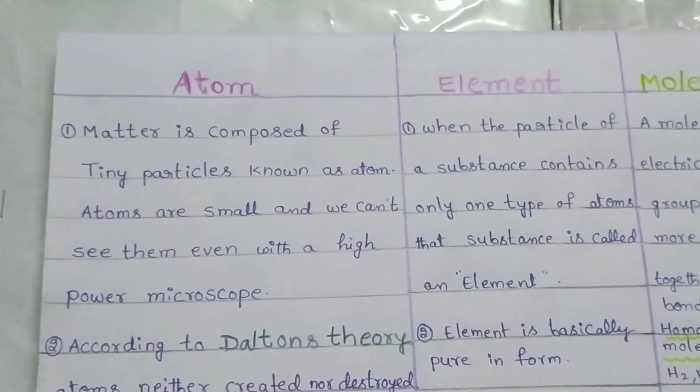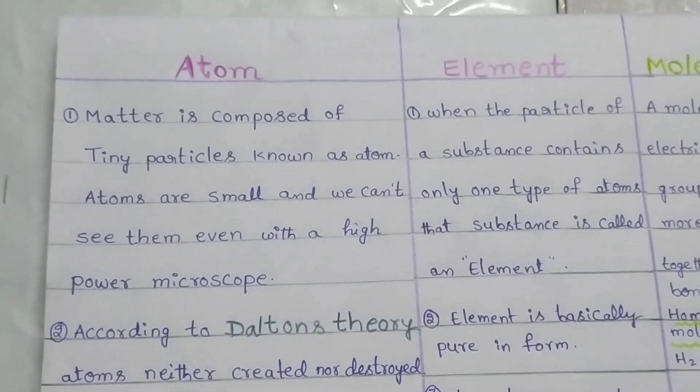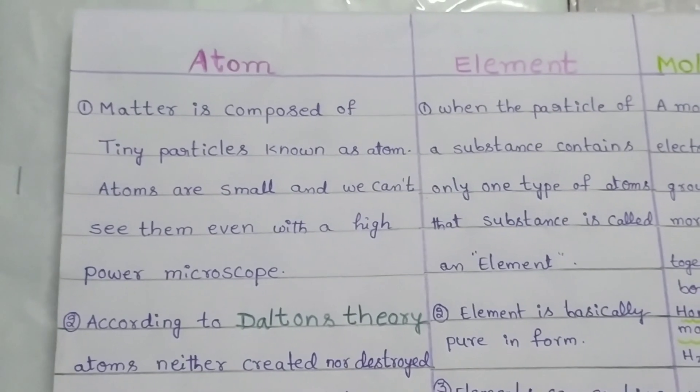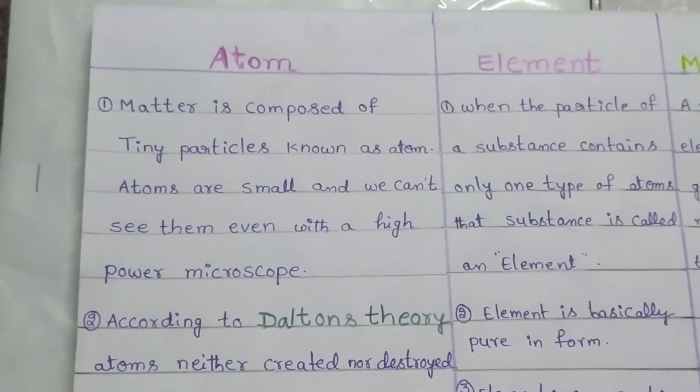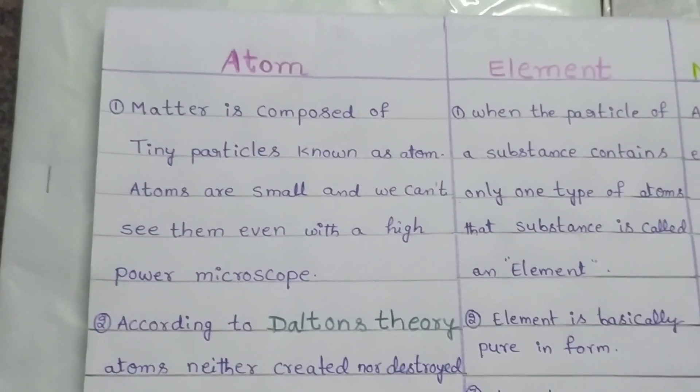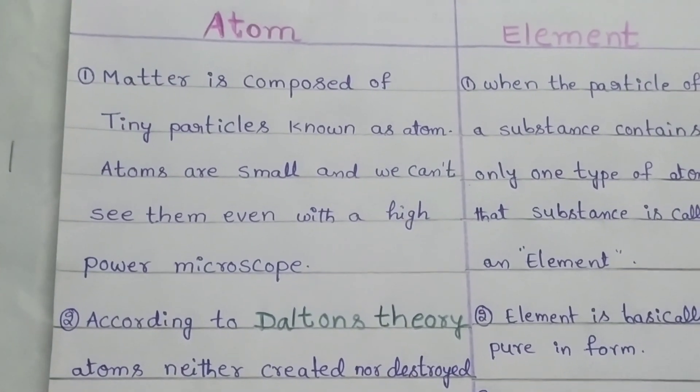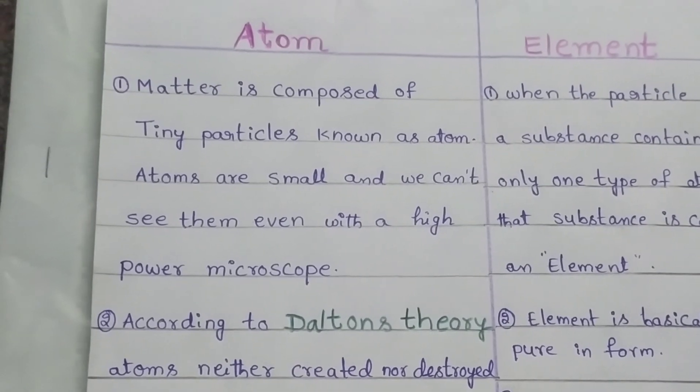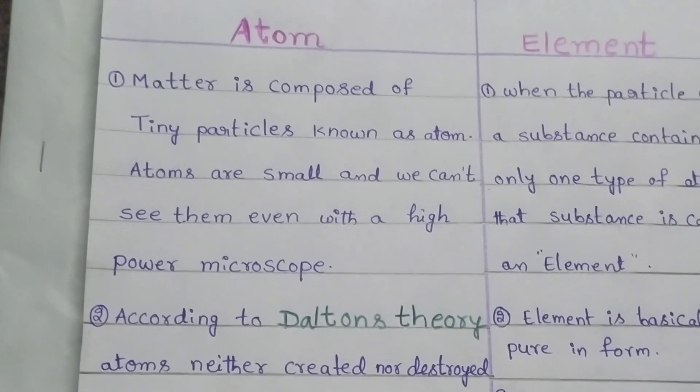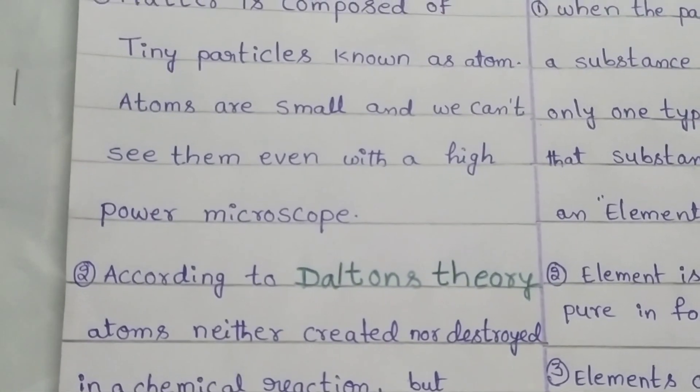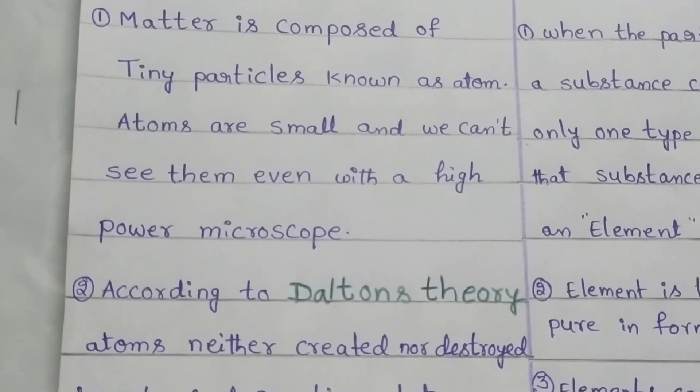First we discuss about atom. Matter is composed of very small tiny particles known as atoms. Atoms are small and we cannot see them even with a high power microscope. That means atoms cannot be seen with the help of our naked eye and also with the help of microscope. That means they are very too small in size.